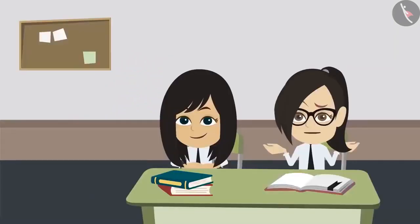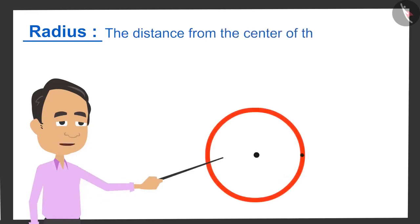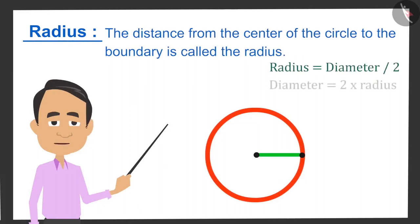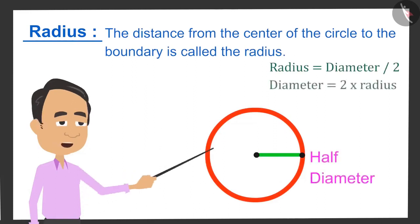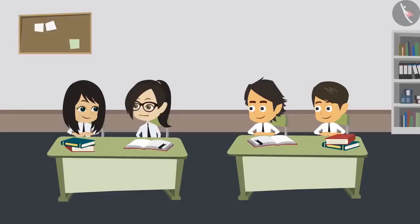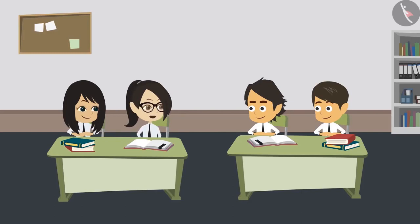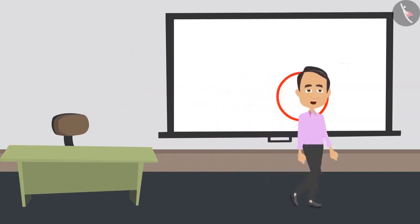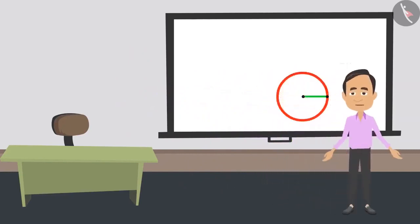Sir, what is radius? The distance from the centre of the circle to the boundary is called radius. It is half of the diameter, so it can also be called half diameter. That means if we measure the distance from the centre of the wheels to the boundary, we will know their radius. Yes, and we can also tell the difference between wheels when we know the radius of different wheels. Now you have understood how to measure a circle, so you can measure the wheels you were asking about.